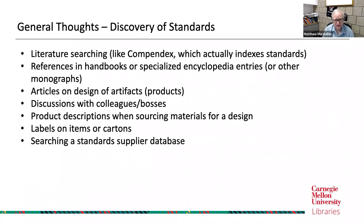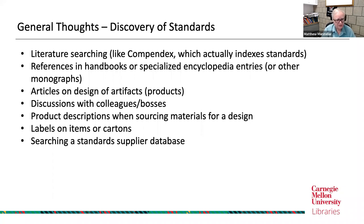In general, literature searching in a database like Compendex — the Comprehensive Engineering Index — will actually index standards. They did this on purpose because so few good indexes to standards exist. If you're in engineering and looking into literature, realize that when you search Compendex, you'll get not only scholarly research articles and conference papers, but it might also retrieve standards of interest. There could also be references to standards in handbooks, specialized encyclopedias, or other types of monographs, like McGraw-Hill Access Engineering, which is a compilation of digital handbooks.